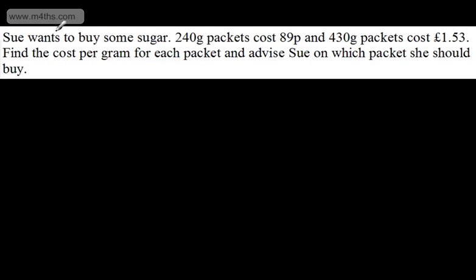Okay let's look at another one. Sue wants to buy some sugar. 240 gram packets cost 89p and 430 gram packets cost £1.53. We are asked to find the cost per gram for each packet and advise Sue on which packet she should buy. So always go back to price divided by quantity. If you ever forget this just think alphabetically. P comes before Q. If you do this the other way round you want the highest possible value. Because that's telling me what I'm getting for every penny. I prefer to work it this way and take the price divided by the quantity and consider the lowest amount.